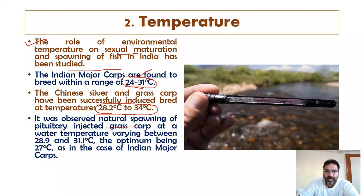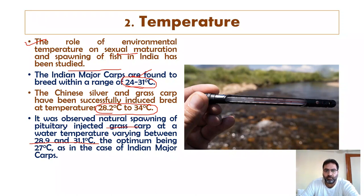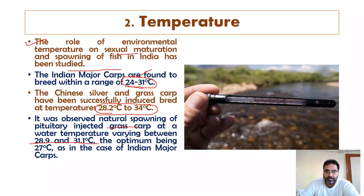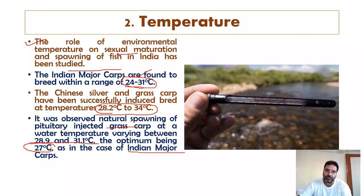Natural spawning of pituitary-injected grass carp was observed at water temperatures varying between 28.9 to 31.1°C. The optimum temperature is 27°C in the case of Indian Major Carps. Natural spawning of pituitary-injected grass carp occurred at water temperatures varying between 28.9 to 31°C.